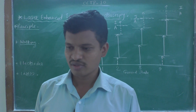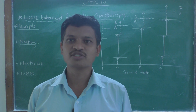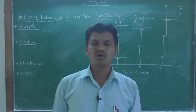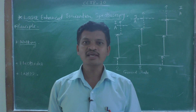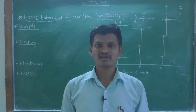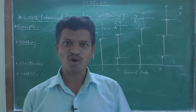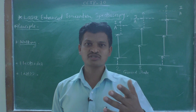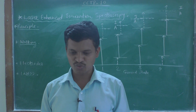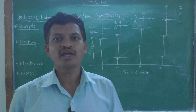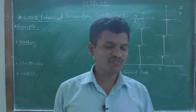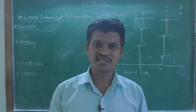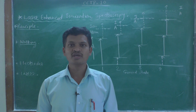In one of our previous videos we learned about RIS, that is Resonance Ionization Spectroscopy. These two techniques are very similar to each other. The only difference is that in RIS we use only lasers for both excitation and ionization of atoms, whereas in LEIS, instead of using a second laser or the same laser with double frequency, we use a flame.